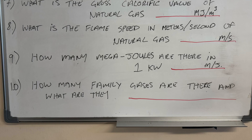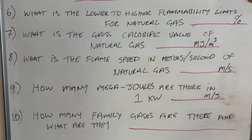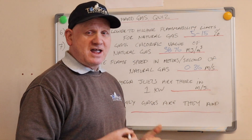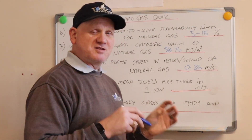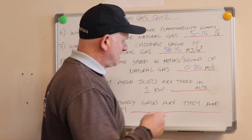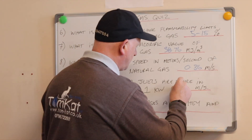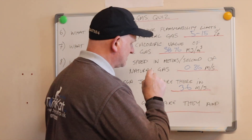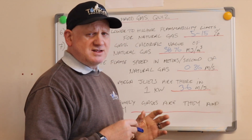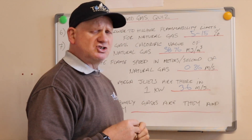Question number nine: how many megajoules are there in one kilowatt? Again, if you gas rate the way I show you, you'll know this because it's part of the formula — and it is 3.6.